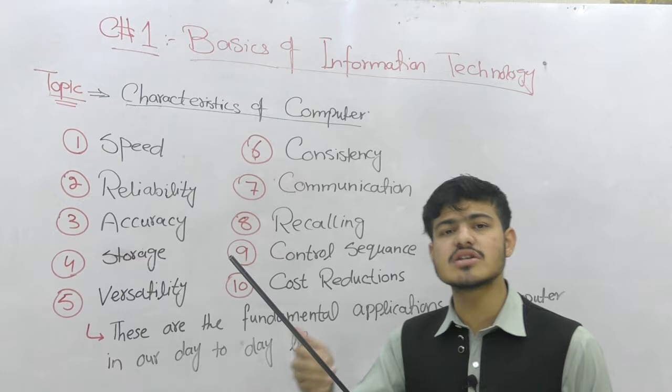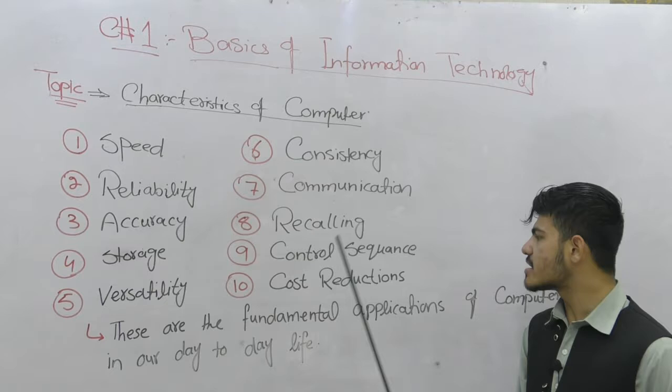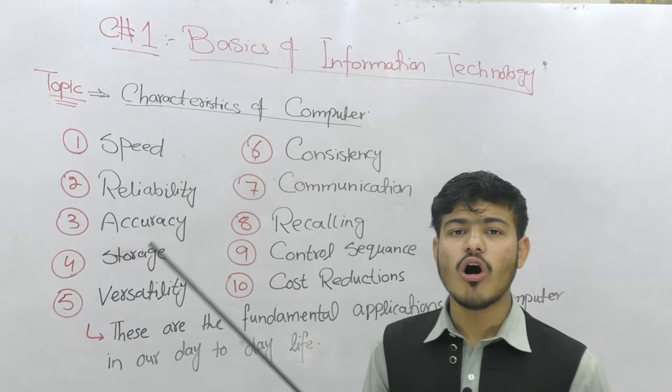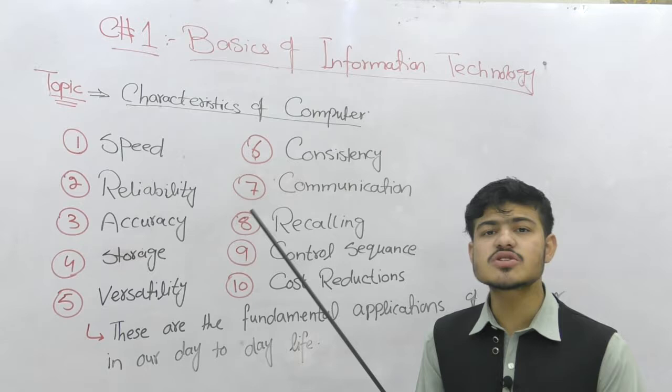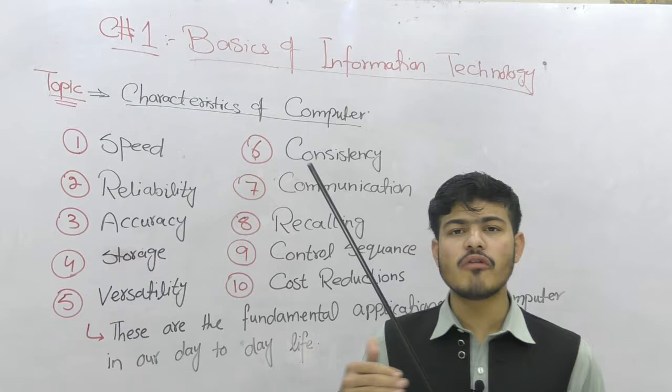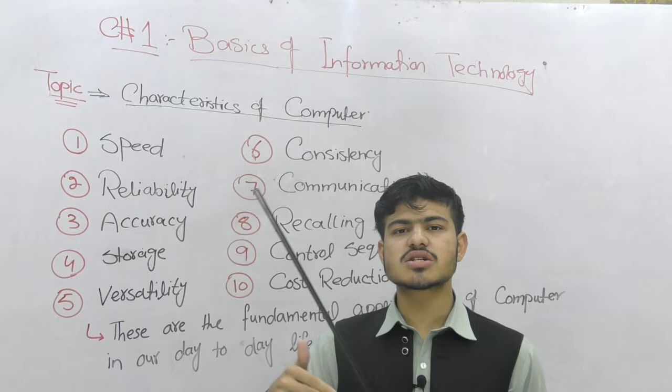Tenth and last characteristic is cost reduction. In an office we can work with less workers because of computers. For example, in an office you need a data entry operator, computer operator, data collecting person, and statistics officer.